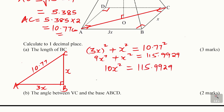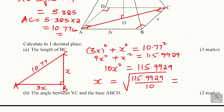Now let's get X. Divide both sides by 10, then take the square root. Using a calculator, you get X equals 3.4 centimeters.